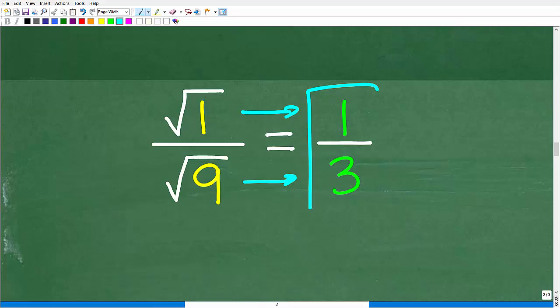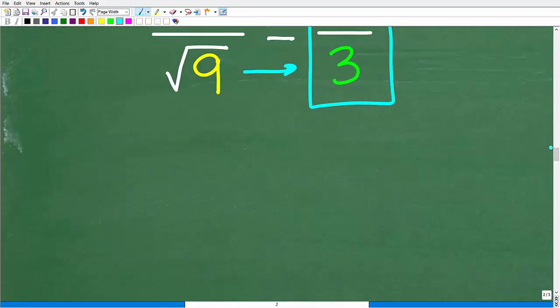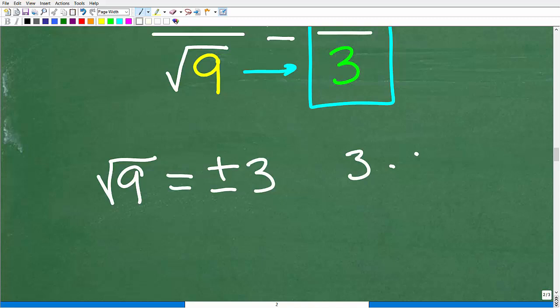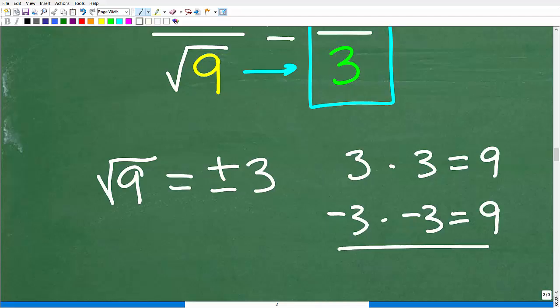So the answer is 1/3. Some of you might be familiar with this positive-negative notation. Let's talk about this real quick because this is an important point. The square root of 9, oftentimes people put the answer down as positive-negative 3 because positive 3 times positive 3 is 9, and negative 3 times negative 3 is also positive 9. And indeed it is, but when you are asked to just take the square root of a number, you really only want to give what we call the principal square root, and that is the positive version of the answer.